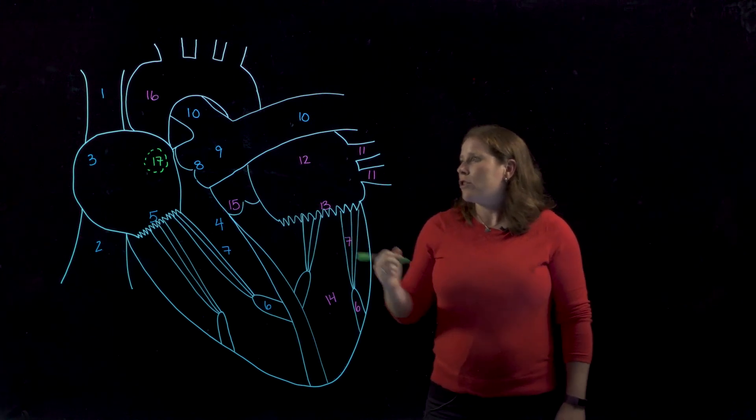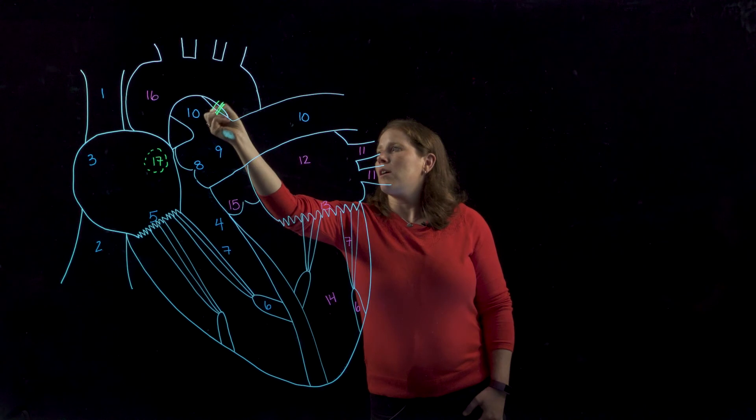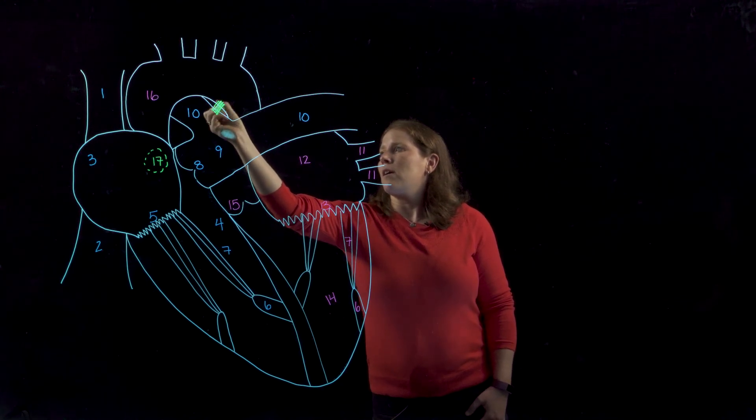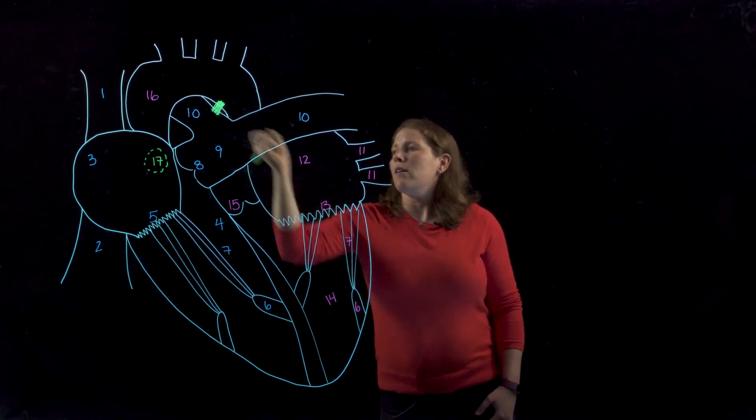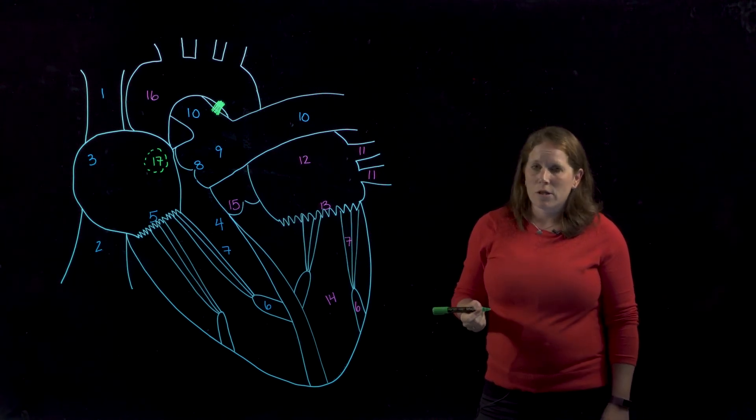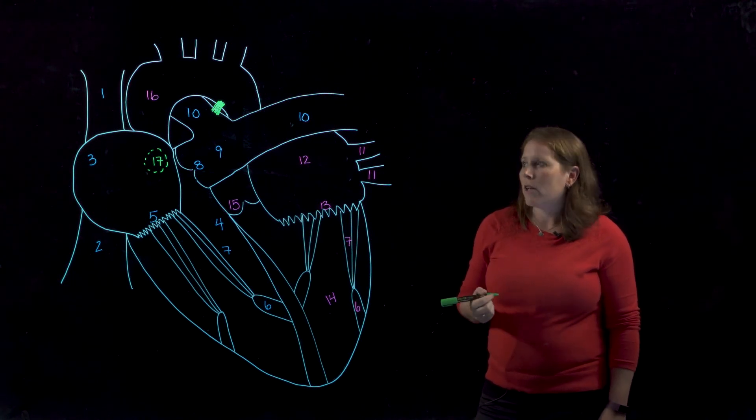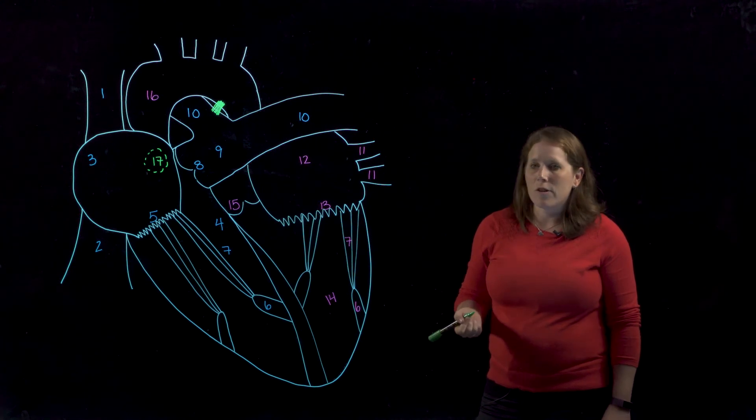The other structure you'll see is a connection between the pulmonary trunk and the aorta. And in the adult heart this is known as the ligamentum arteriosum. It's a remnant of a duct or another opening called the ductus arteriosus that was present in the fetal heart.